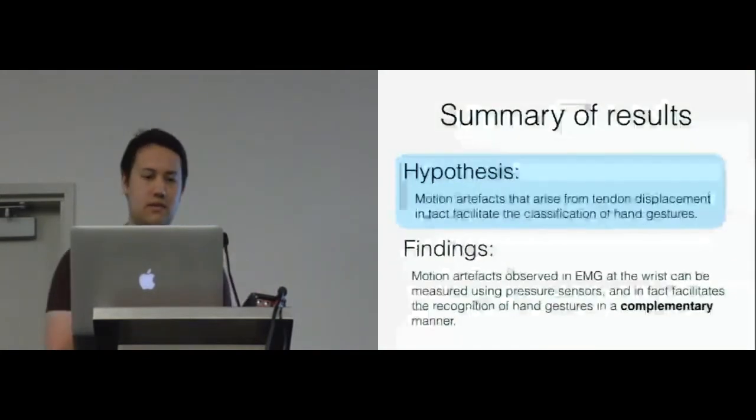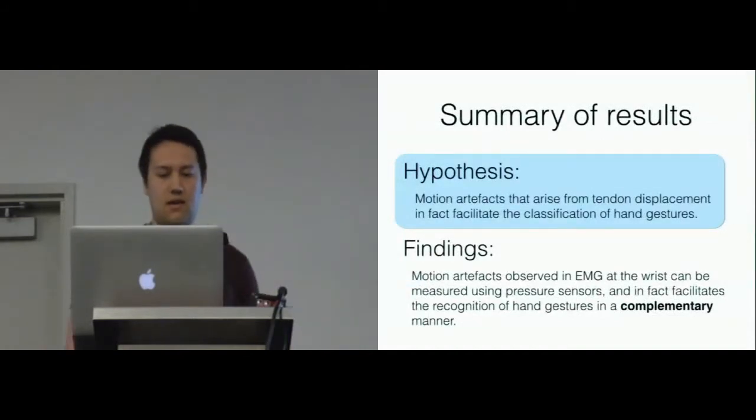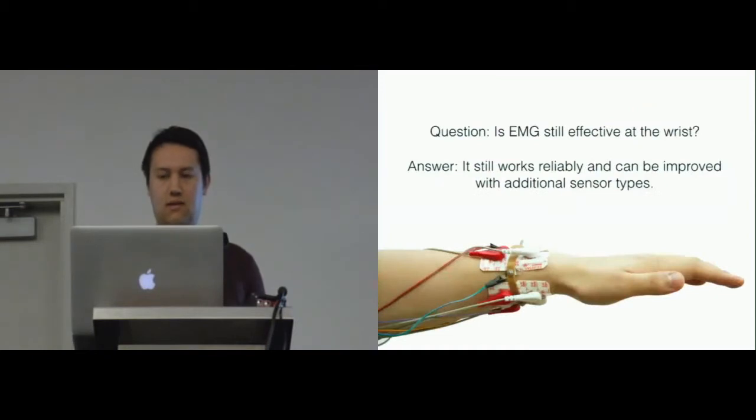To summarize the results, we think that these findings support our initial hypothesis, that the motion artifacts that arise from the tendon displacement does, in fact, facilitate the recognition of hand gestures, but furthermore, in a complementary manner.